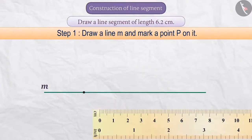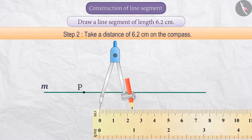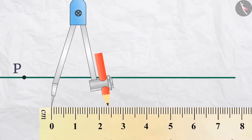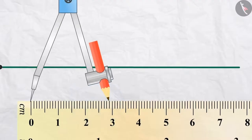Step 2: Now placing the pointed end of the compass on 0, we will stretch the compass so that the end with the pencil reaches the sign indicating the distance of 6.2 cm.